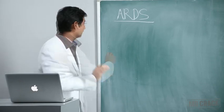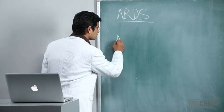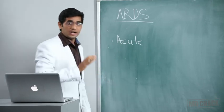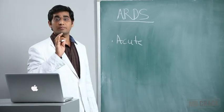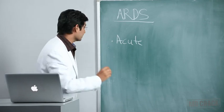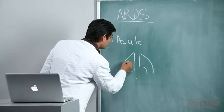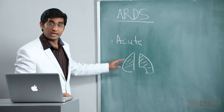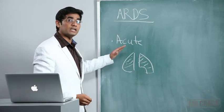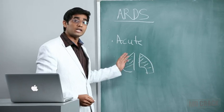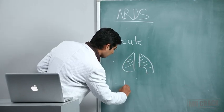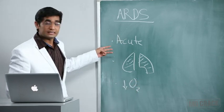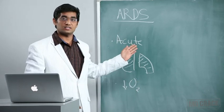For ARDS we have three major points. As the name suggests, it's an acute onset. Second, there should be diffuse lung injury which we can evidence by looking at chest x-ray. The chest x-ray will show diffuse involvement of at least three-fourths of lungs bilaterally. Third important point is hypoxemia, that is decreased O2 pressure.